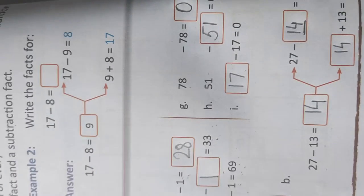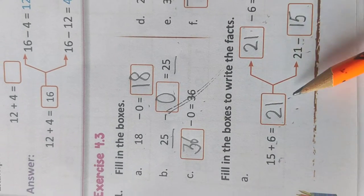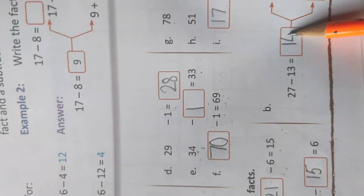So addition and subtraction go hand in hand. The two numbers I added, if I subtract one of those numbers from the sum, I'll get the another number. Similarly, this way. So this was exercise 4.3 in your book.